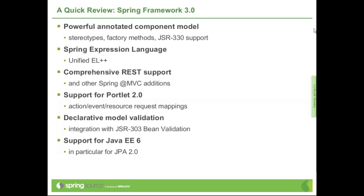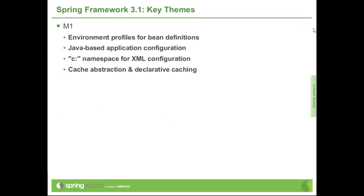That's basically the state of the art — Spring 3.0, currently at 3.0.5. In Spring 3.1, we selected a number of key themes where we build on the Spring 3.0 foundation, improve the story that Spring 3.0 started, and complete some gaps — some functional gaps, some stylistic gaps in particular.